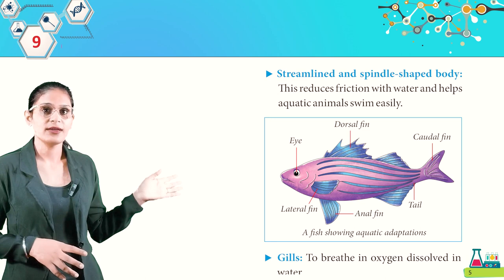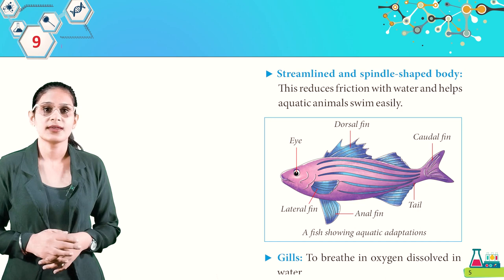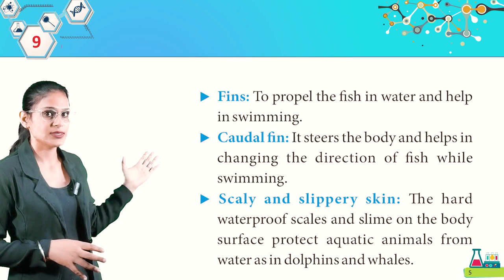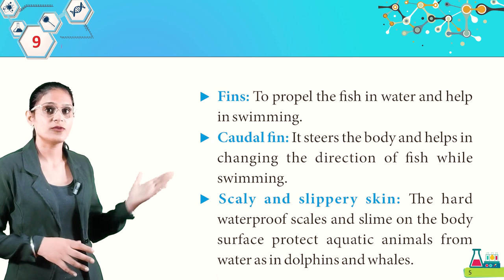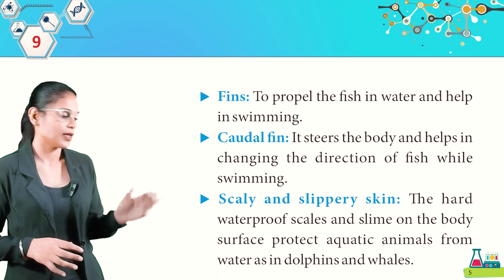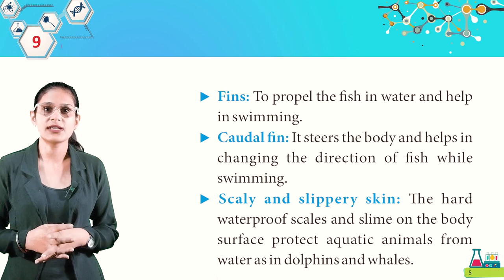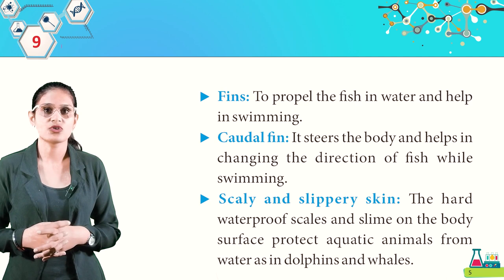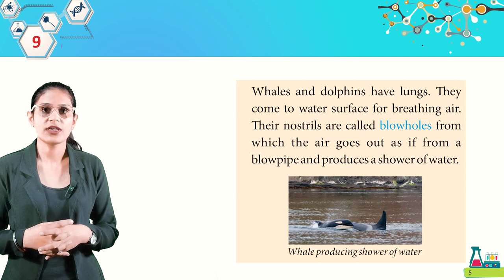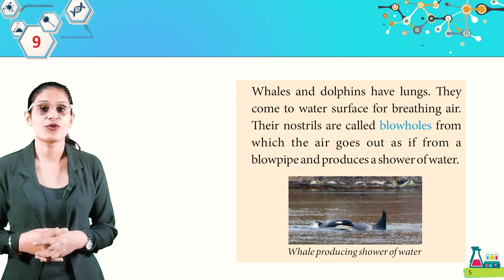A fish has eyes, dorsal fin, caudal fin, tail, anal fin, and lateral fin. Gills help breathe oxygen dissolved in water. Fins propel the fish and help in swimming. The caudal fin steers the body and helps change direction. Scaly and slippery skin — with hard waterproof scales and slime — protects aquatic animals. Whales and dolphins have lungs and come to the water surface to breathe; their nostrils are called blowholes, from which air exits forming a shower of water.